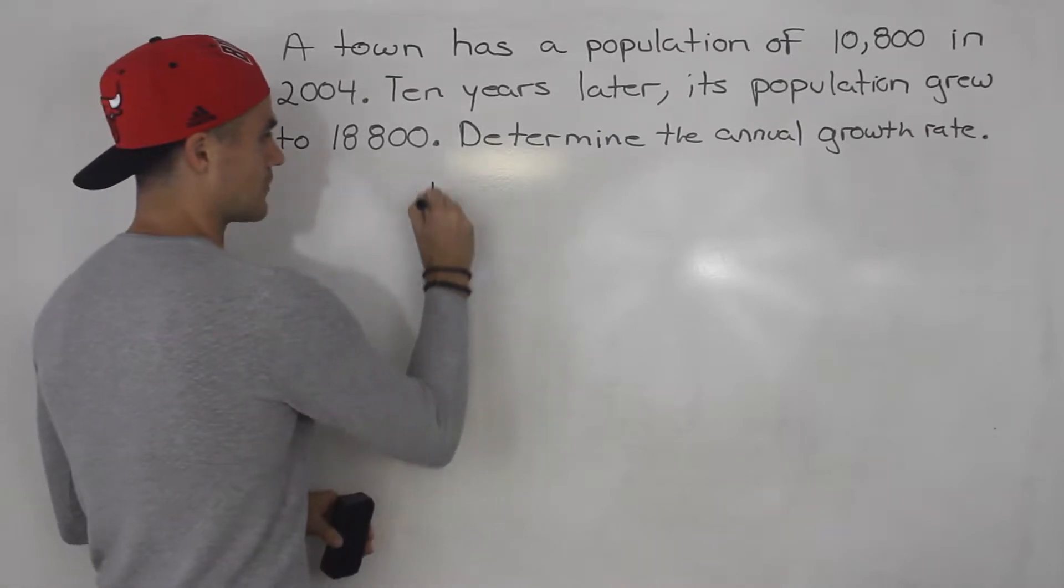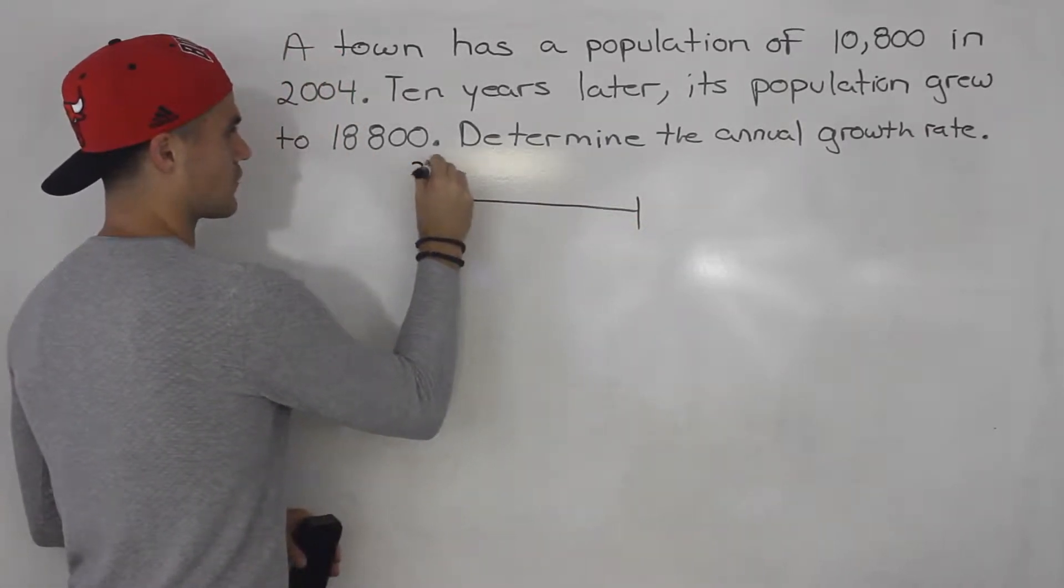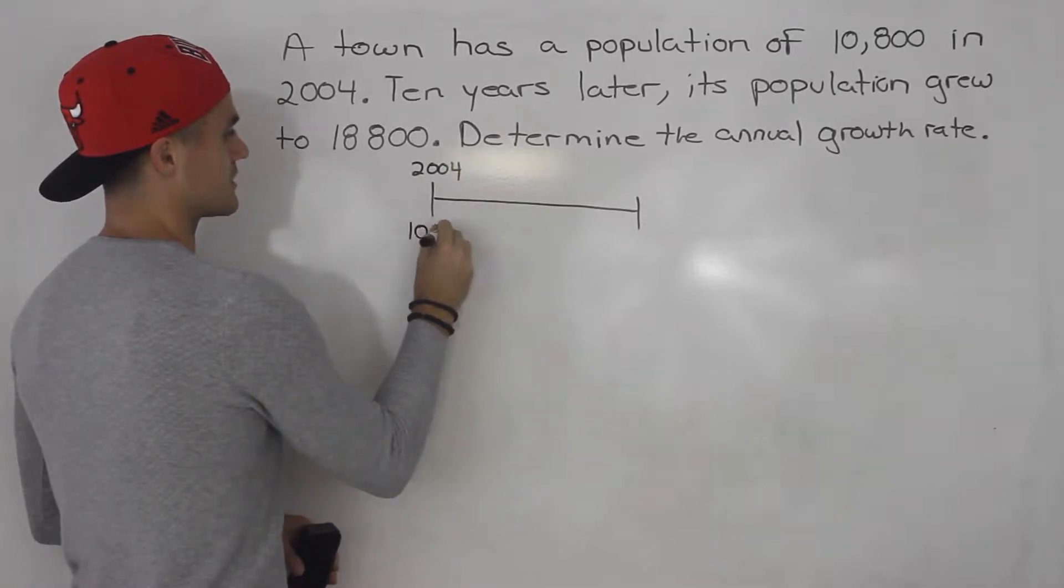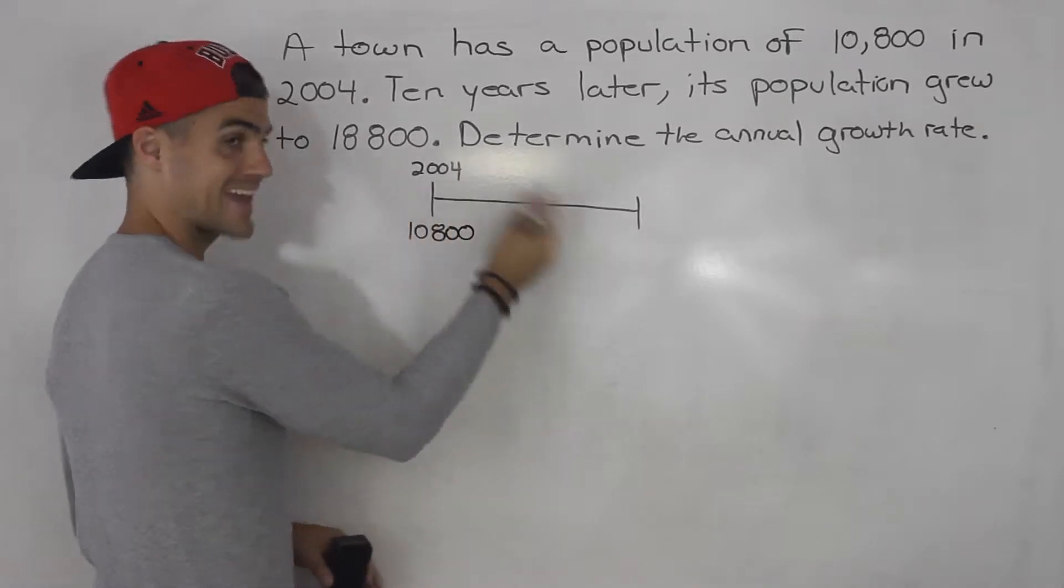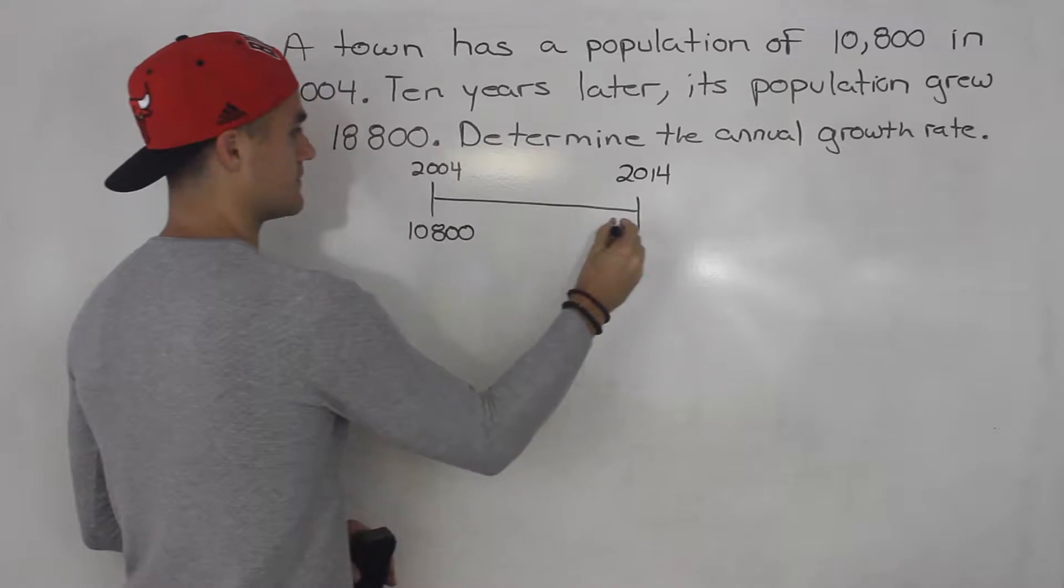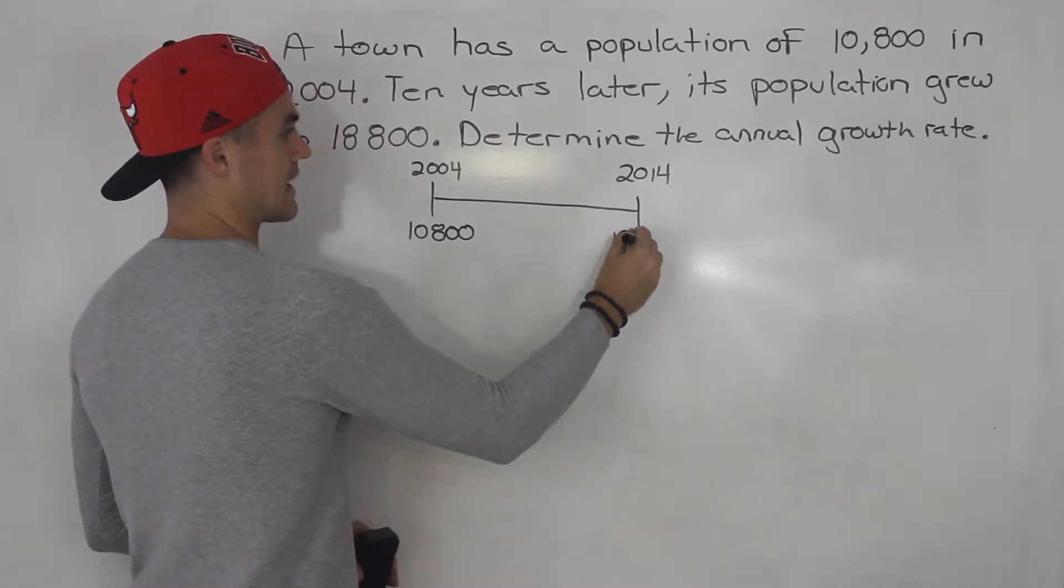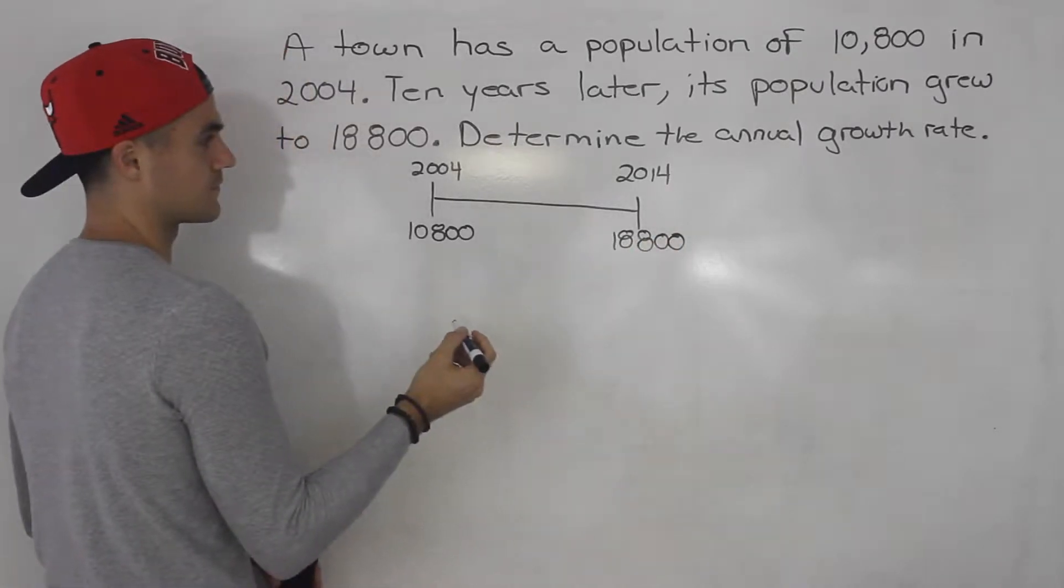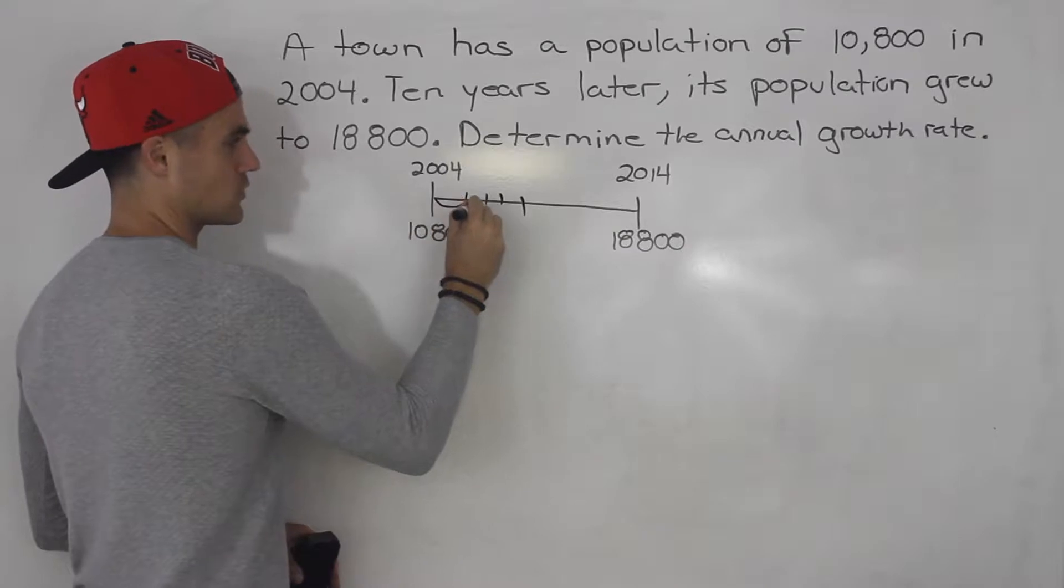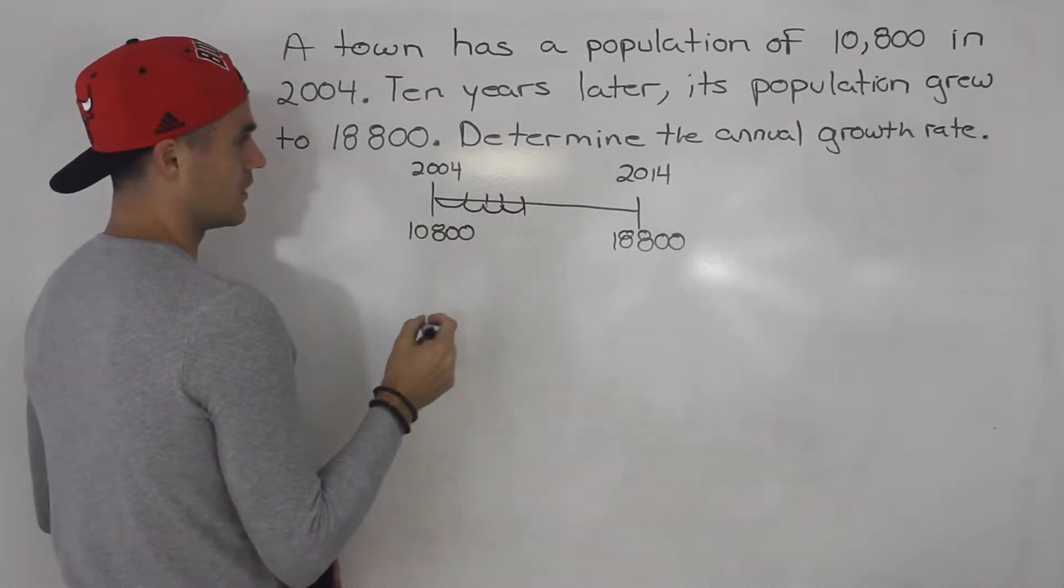So showing this on a timeline first, let's say this here is 2004. This town has a population of 10,800. Ten years later, so that's in 2014, the population will be 18,800. And we have to figure out what is that annual growth rate every year.